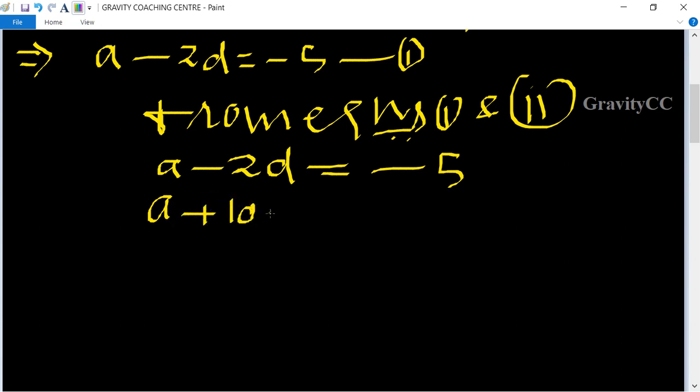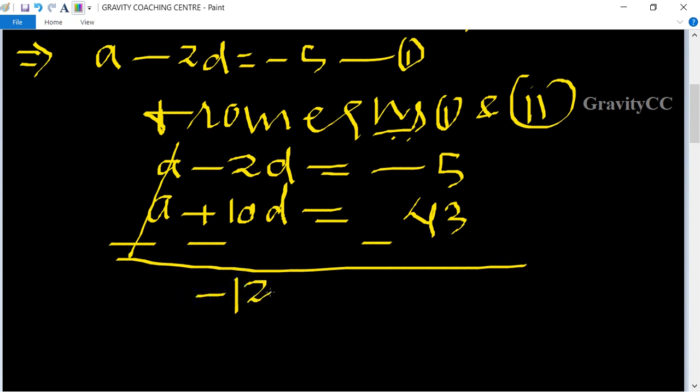Subtracting these equations: minus 12d = minus 48. So d = 48 divided by minus 12.